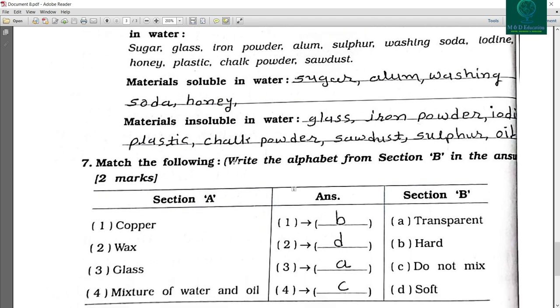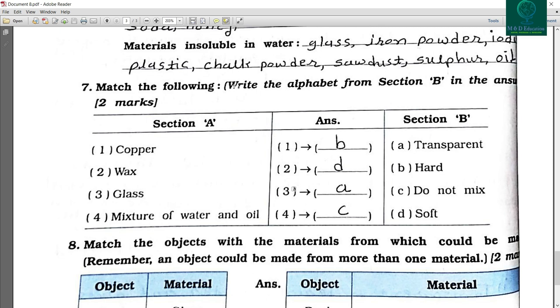Now the match the tables. Copper, so copper is hard. Wax, so wax is soft. Then glass, glass is transparent. And a mixture of water and oil is do not mix.